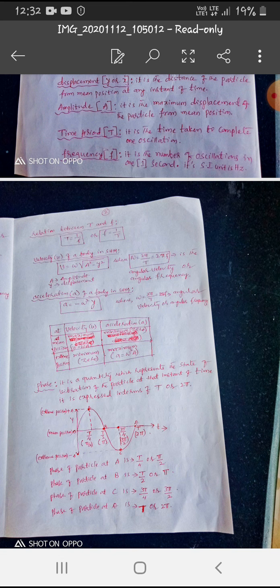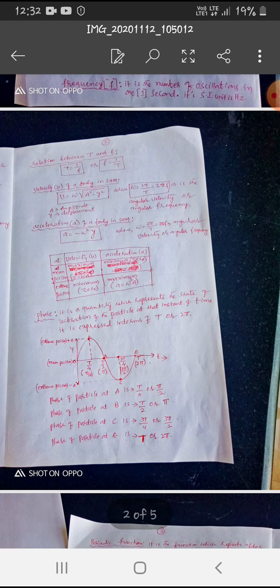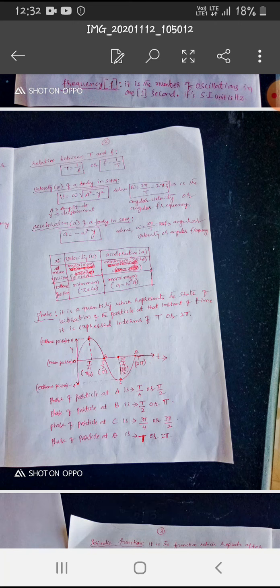Velocity of a body in SHM or simple harmonic motion. If you come in, they ask what is SHM is, you should have written in a simple harmonic motion. So here, V is equal to, velocity is equal to, W root A square minus Y square. A is the amplitude and Y is displacement.